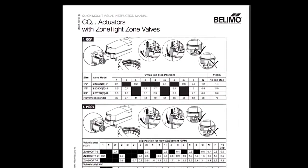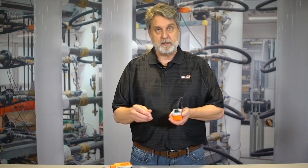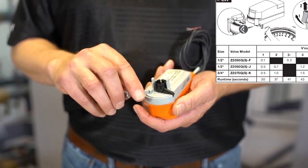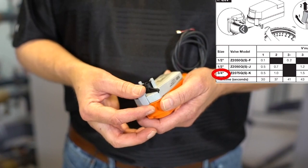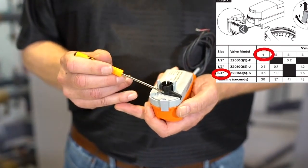It's going to give you flow in CV. So, if I'm putting this on a VAV box and it calls for a half a gallon per minute flow, I look at the table. It tells me, because this is going to be on a three-quarter inch valve, I need number one for the clip setting. Very easily, I clip it on.